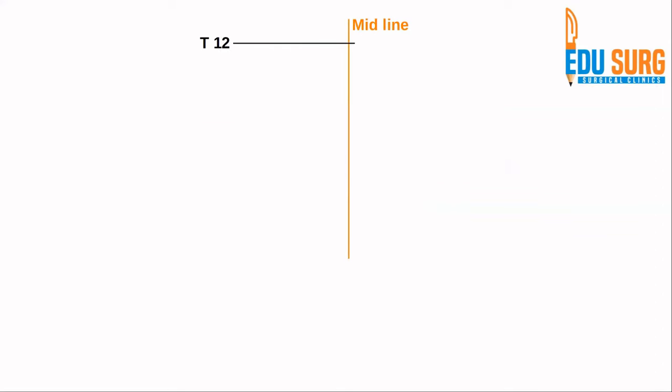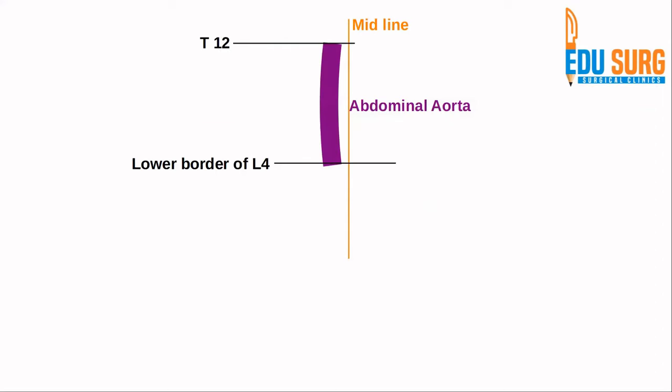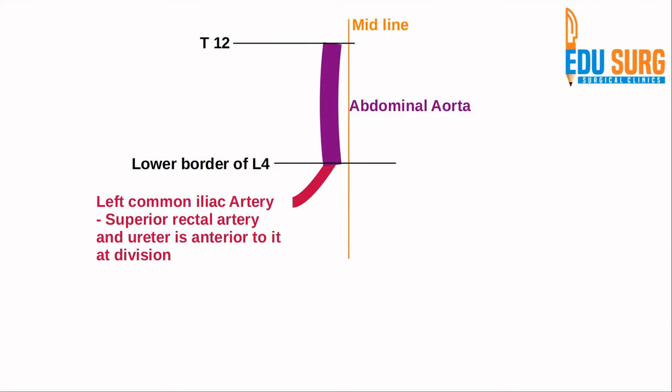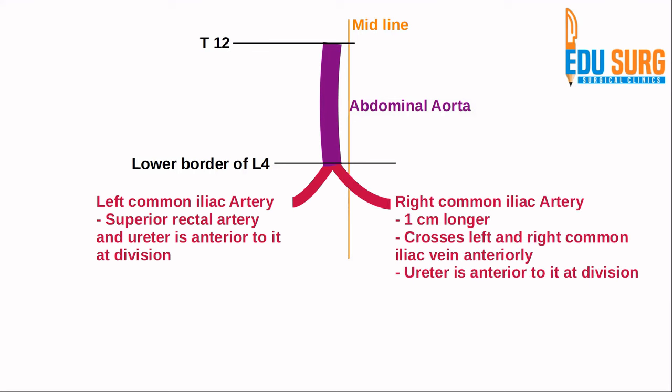Today we are going to focus more on the iliac arteries and their branches. The abdominal aorta runs from T12 to L4 and is slightly to the left of the midline. That is why when it divides into the two common iliac arteries, the right common iliac artery is logically longer — because it has to cross the midline and go towards the right. This is a very commonly asked question. The right common iliac artery is one centimeter longer.